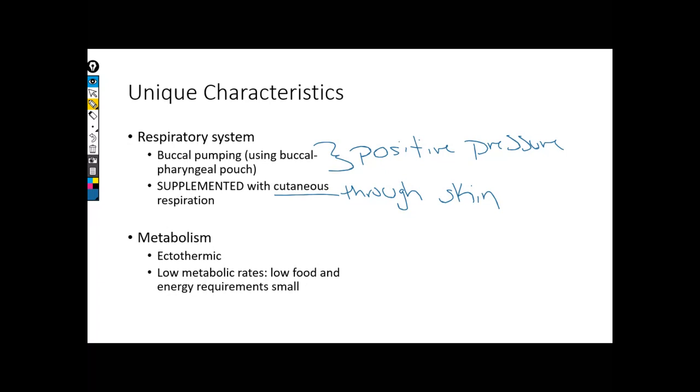And so what will be beneficial for them is their metabolic rates overall are very low. And this is one of the benefits of being ectothermic overall. Because their bodies are not powering their body heat, they don't have to use their food to power up keeping themselves warm. They're not using energy for that. All of their energy is largely going towards being fat and making babies.